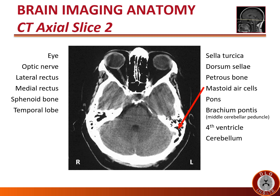Here we see the pons in the middle of the brainstem. The faint, slightly hyperdense round structure in front of it is the basilar artery, between the pons and the dorsum sellae or clivus. Brachium pontis literally means 'arm of the pons.' As you can see, it is an extension connecting the pons to the cerebellum, also known as the middle cerebellar peduncle.